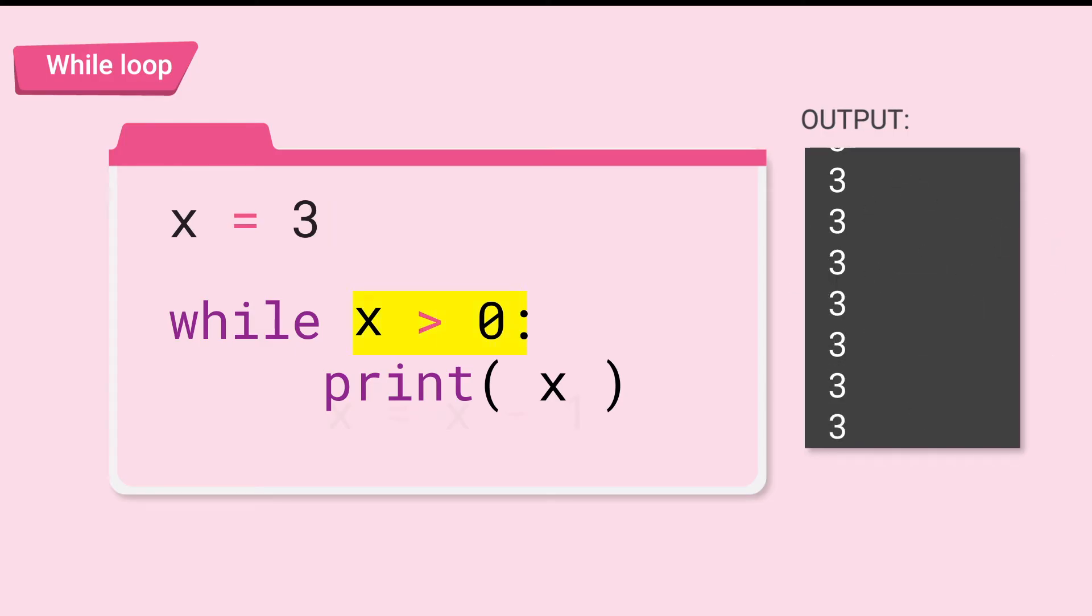The while loop condition is checked every iteration of the loop. There is no code that will change the value of x, and x will always be 3, which is greater than 0, making this loop a forever loop.